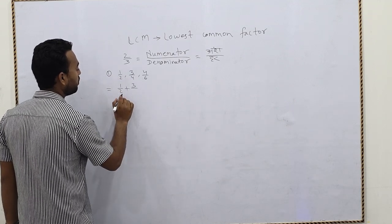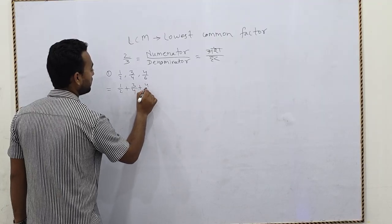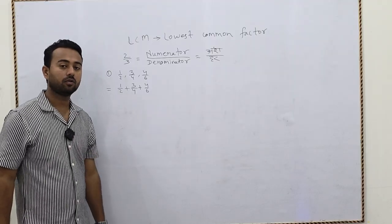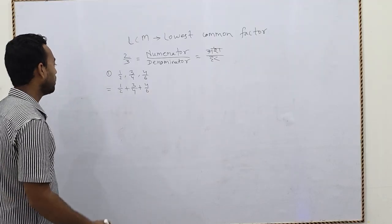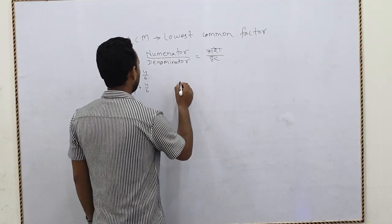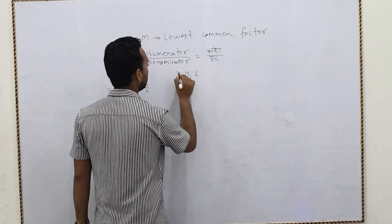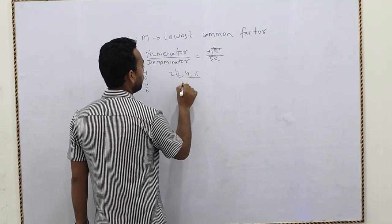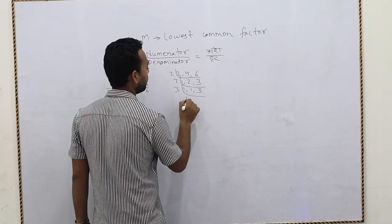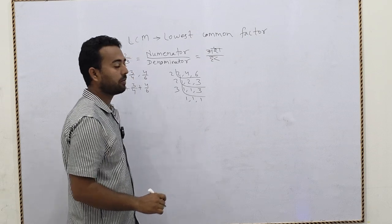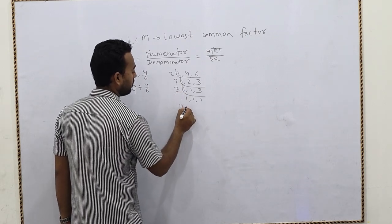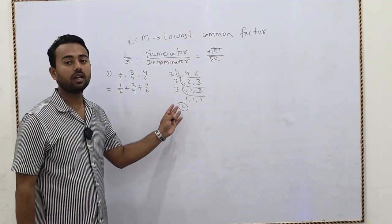In place of the comma we will put a plus sign: 1/2 + 3/4 + 4/6. The next step is to take the LCM of the denominators. Earlier, we used to find the LCM like this: 2, 1, 2, 3 — again 2, 1, 1, 3 — again 3, 1, 1, 1. Then we multiply: 2 × 2 × 3 = 12. So LCM is 12. This is the old method.